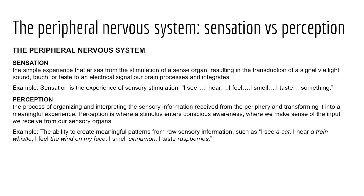Perception, on the other hand, is the process of organizing and interpreting the sensory information we receive from the periphery, transforming raw information into a meaningful experience. It's where a stimulus enters our conscious awareness — where we make sense of input from our sensory organs. So with perception, we might say: I see a cat, I hear a train whistle, I feel the wind on my face, I smell cinnamon, or I taste raspberries.